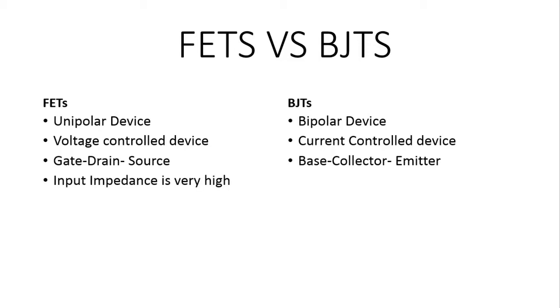The input impedance of the field effect transistors is very high, typically from one mega ohm to several hundred mega ohms, whereas comparatively the input impedance of BJTs is lower.